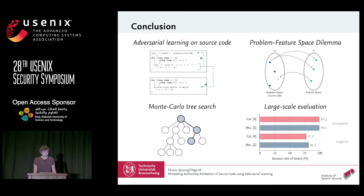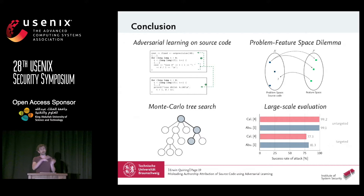To summarize the main takeaways: we have seen how to perform a black box attack against authorship attribution with realistic constraints. We considered the problem-space features-based dilemma and the unique challenges of adversarial learning in a discrete domain. We introduced Monte Carlo Tree Search, which does not depend on the learning algorithm — so it works for random forests too — relieving us from needing a substitute deep neural network model and hoping that adversarial examples transfer. The approach is quite generic and also applicable to other domains such as text or PDF malware.